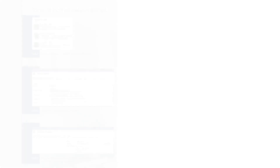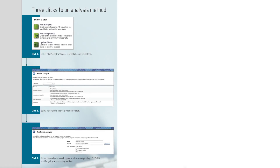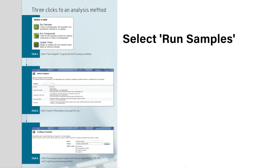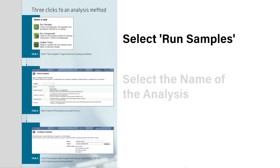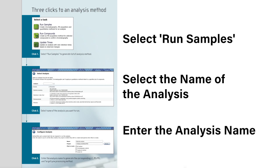With Conpedia, a scientist can actually arrive at an analysis method in three clicks. First, they select Run Samples to generate a list of analysis methods. Next, they select the name of the analysis they want to run. And for the third click, they enter the analysis name to generate the corresponding LC, MS-MS, and target-link processing method.